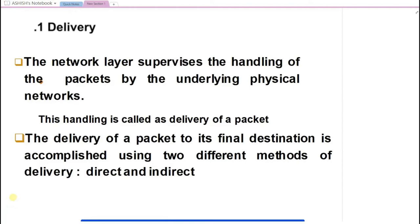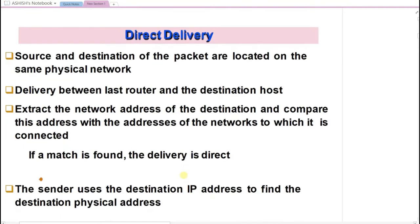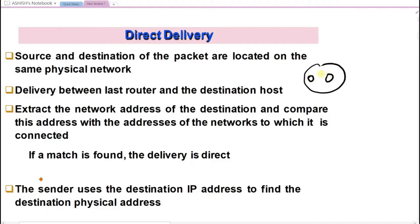There are two kinds of delivery: direct delivery and indirect delivery. Direct delivery is when the source and destination belong to the same network. If your source and destination are part of the same network, it is said to be a direct delivery.